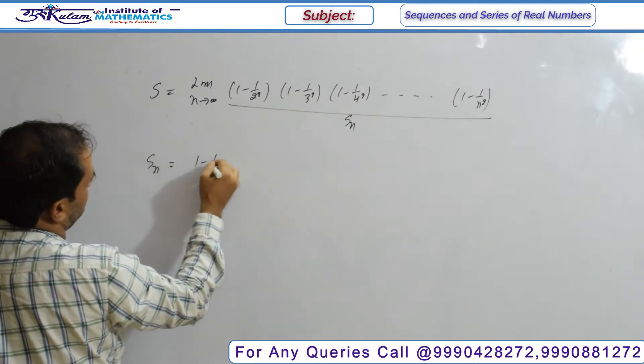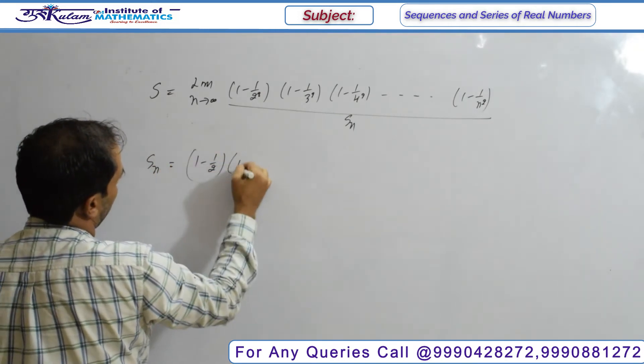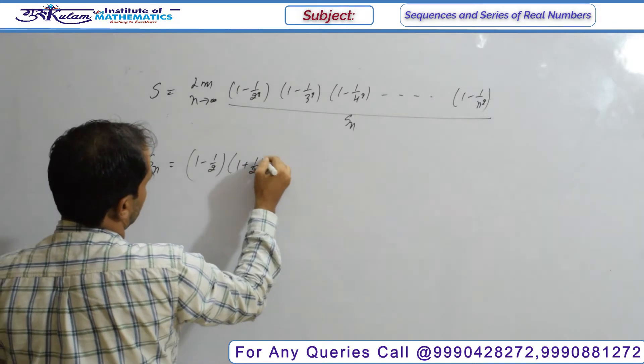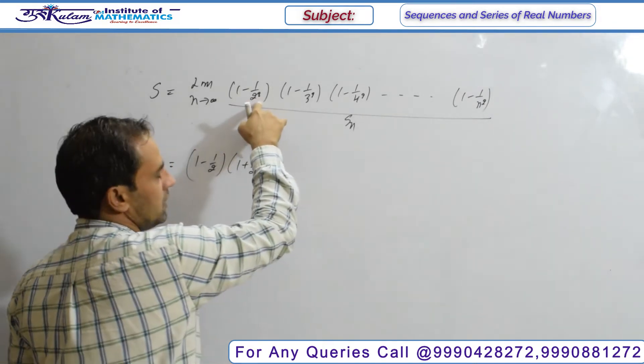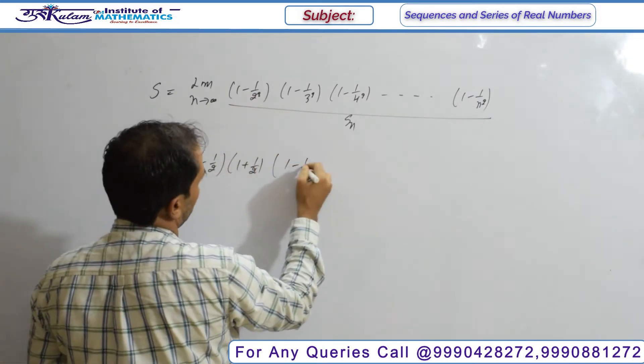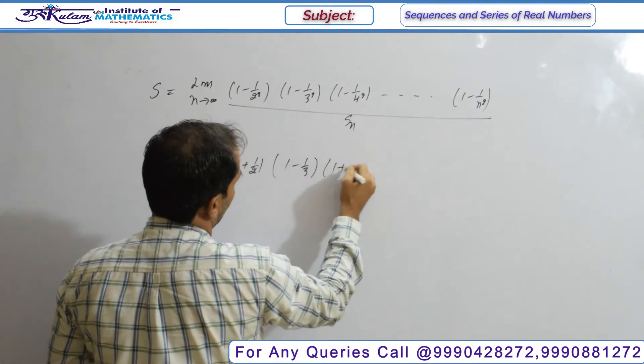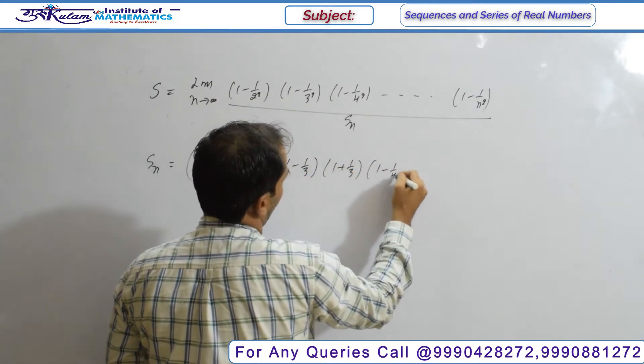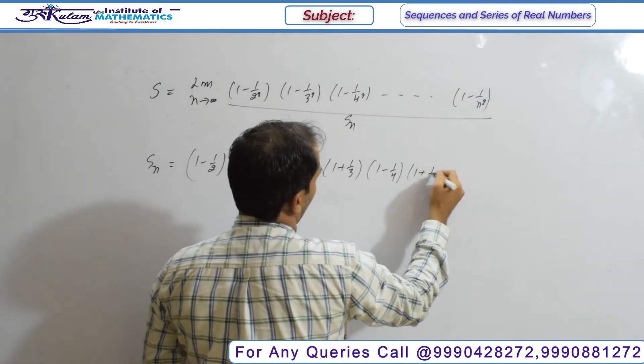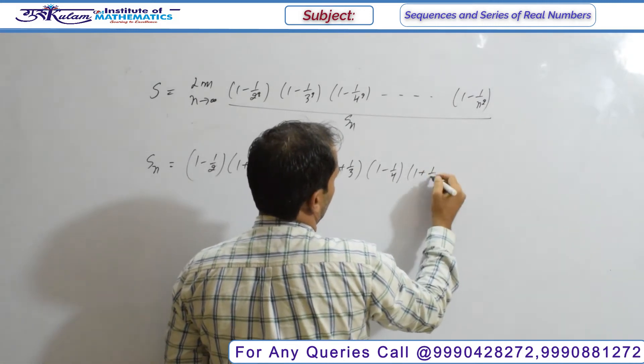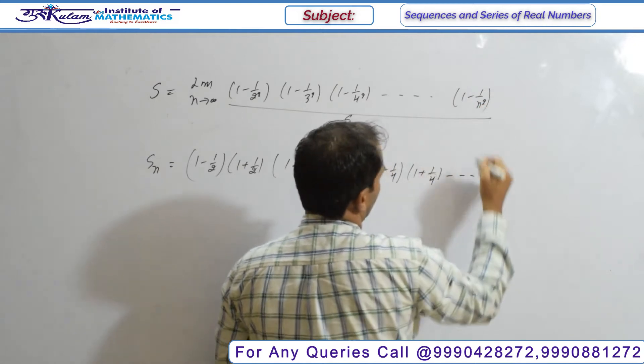S of n can be written as (1 - 1/2)(1 + 1/2) using the a² - b² formula. This is (1 - 1/3)(1 + 1/3), then (1 - 1/4)(1 + 1/4), and so on for the previous terms.